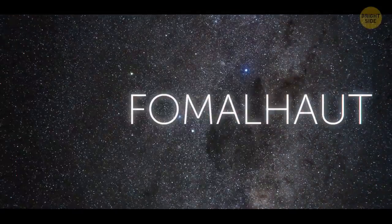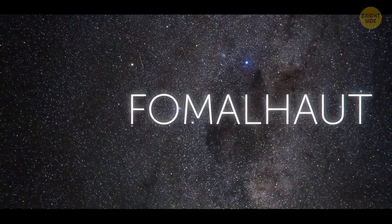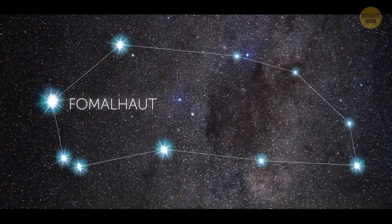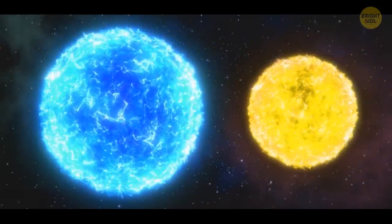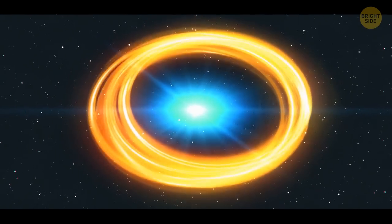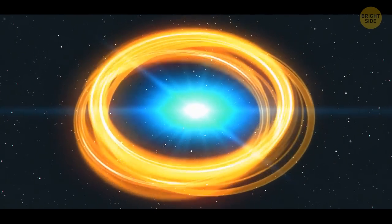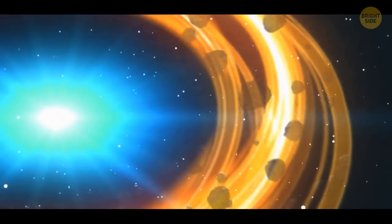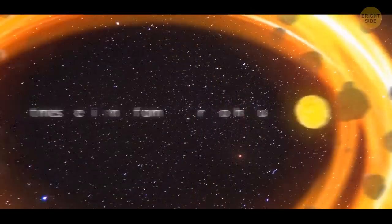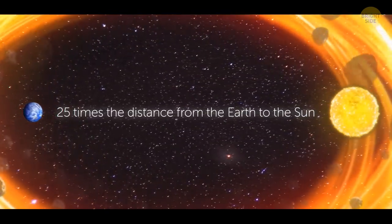But let's travel 25 light-years away to another special star, Fomalhaut. It's one of the brightest stars in the night sky, and it's in the constellation Southern Fish. It's almost twice as big and heavy as the Sun. If you look at it from far away, you can see a bright yellow disk around it. It's a debris disk full of bits of space rock, and it's huge. Its width is about 25 times the distance from the Earth to the Sun.